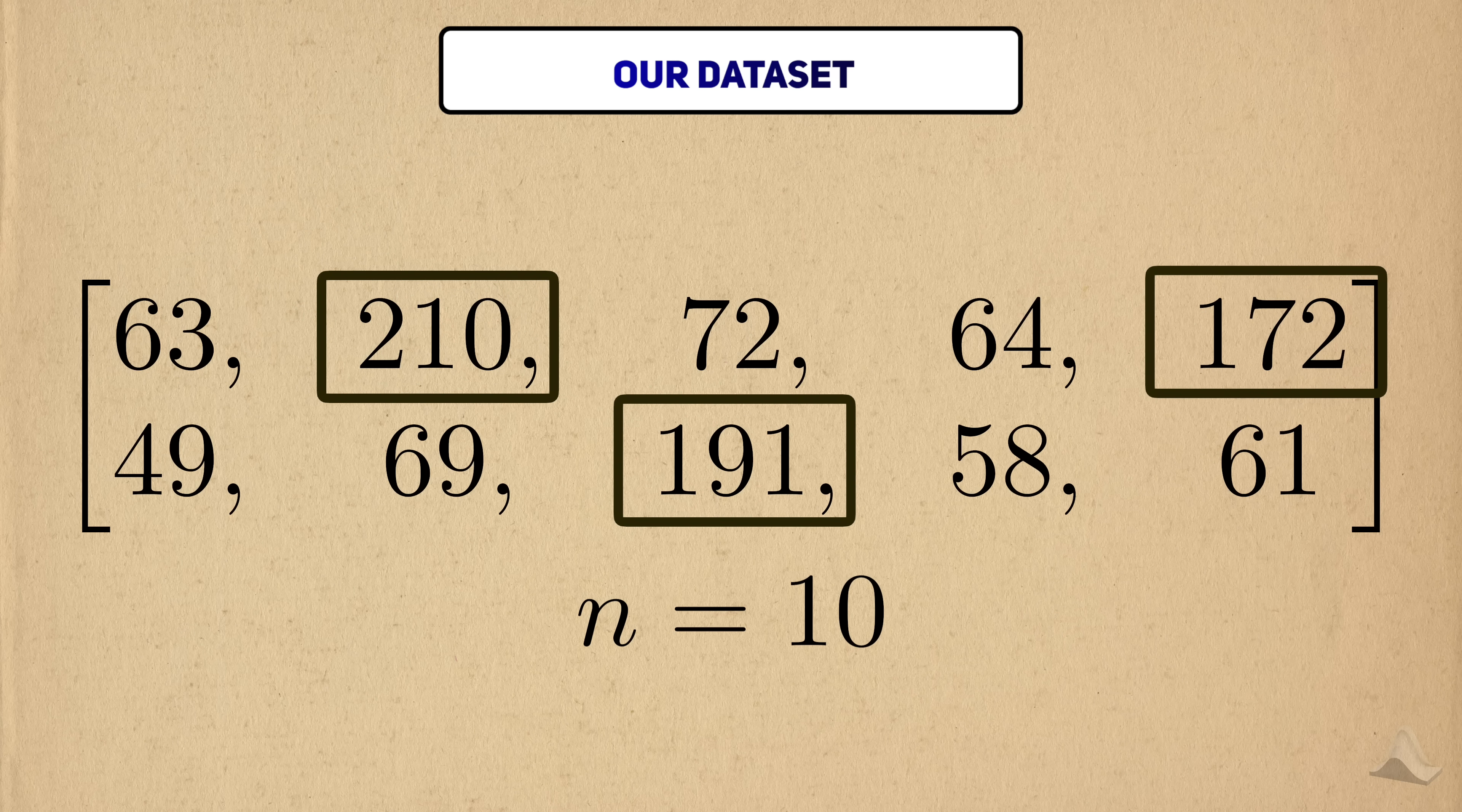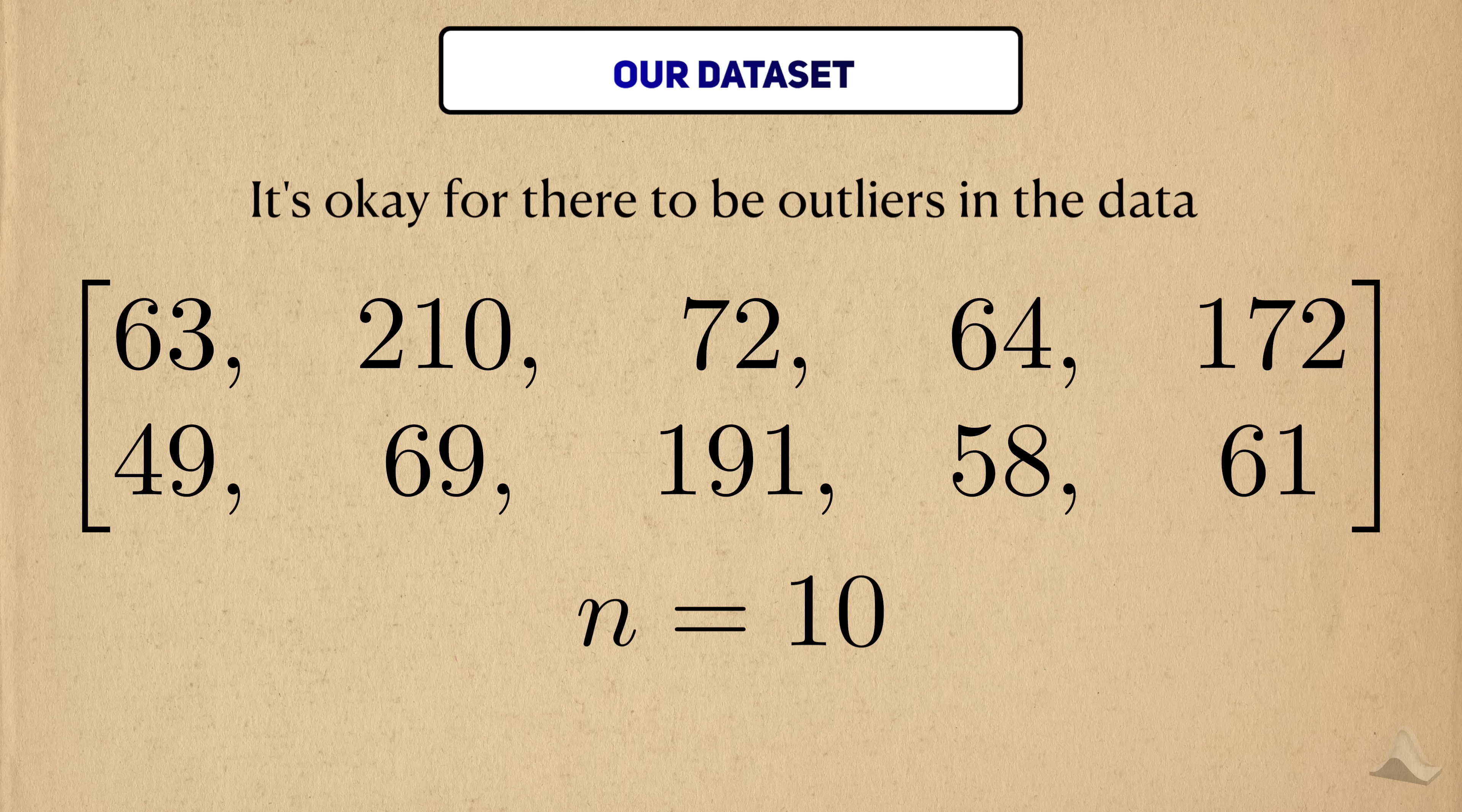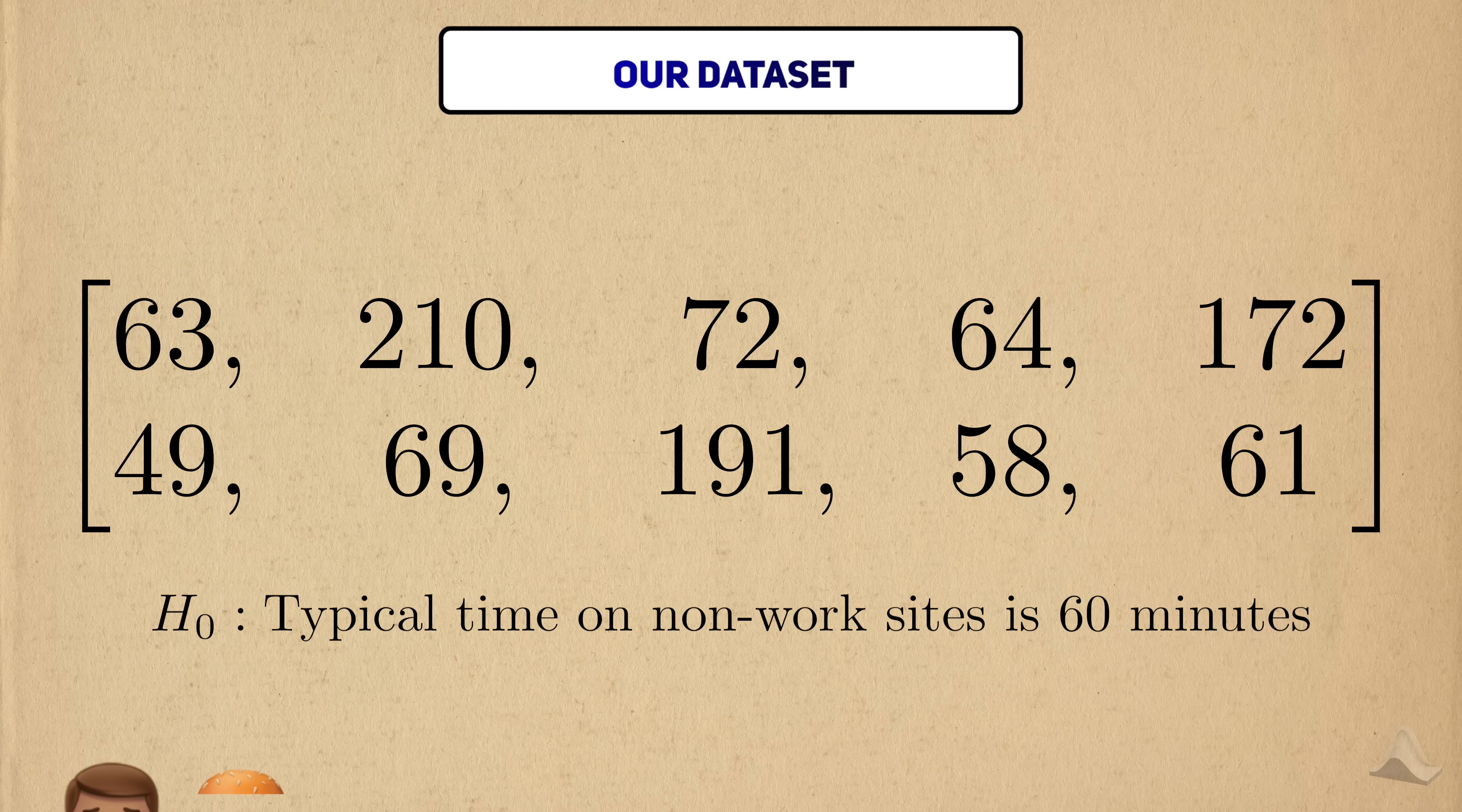But look at these lazy bums. I mean employees. These people spend way more time on non-work sites. In other words, they're outliers. But unfortunately, they're not outliers that I can just cherry-pick out of the data. It's okay for there to be outliers. Some research contexts just have natural outliers in them, and it would bias the data to remove them. I'd like to test the hypothesis that my employees spend about 60 minutes on non-work sites. That's how much time they're allotted for lunch, so that's how much time they should be spending on non-work videos.